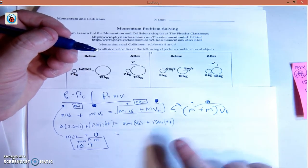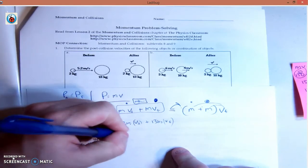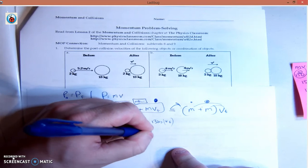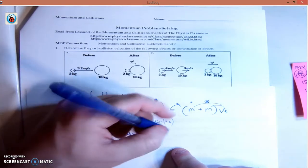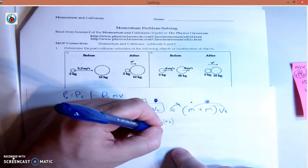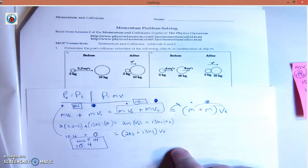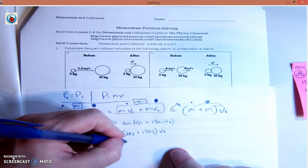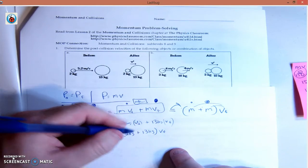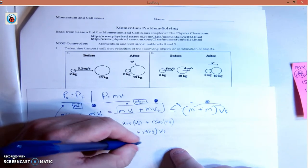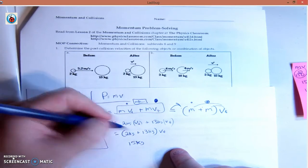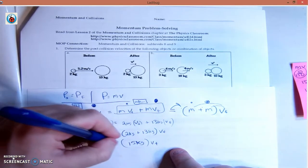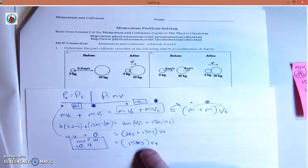Let's rearrange it. Mass of one plus mass of other times final velocity. 13 plus 2 is 15 kilograms. That's our total mass times the final velocity, which we don't know.